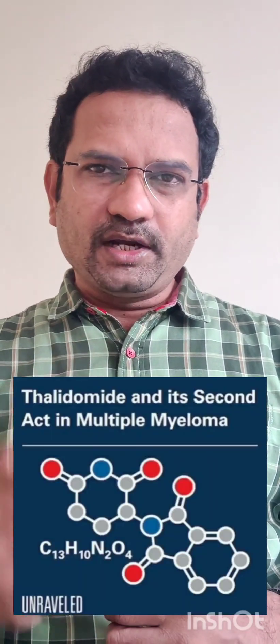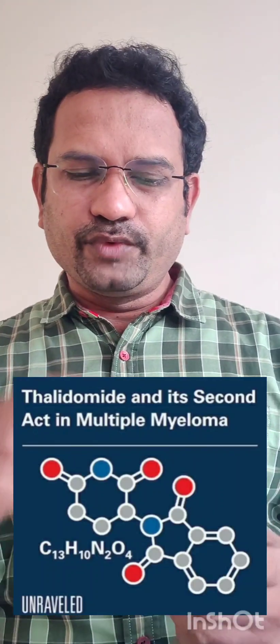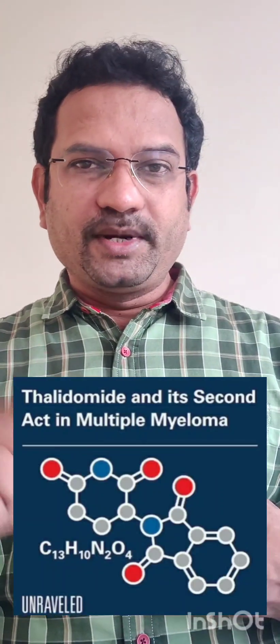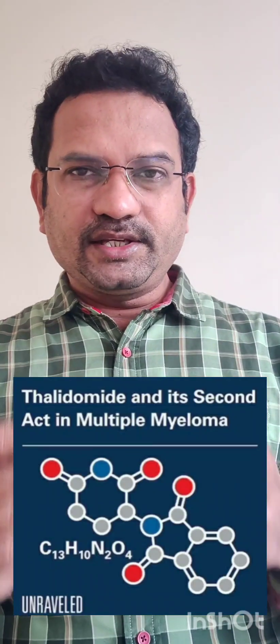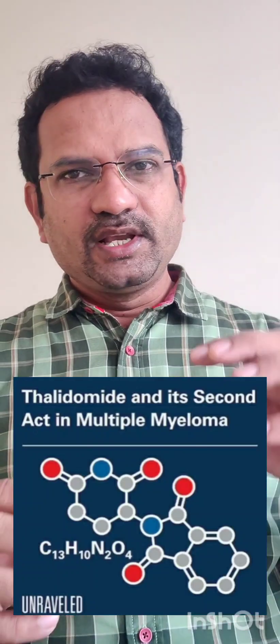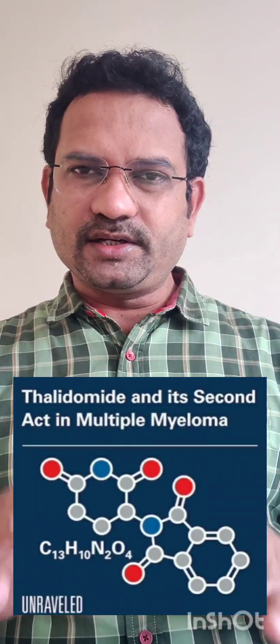Let us analyze each option. Option A: it is currently used to treat multiple myeloma. Multiple myeloma is a kind of blood cell cancer. In the bone marrow, red blood cells, platelets, and white blood cells are formed. One type of white blood cell is the plasma cell, from which antibodies are generated. Cancer of the plasma cell is called multiple myeloma, causing decreased red blood cells and platelets, bone damage, liver damage, and kidney damage. Thalidomide was approved by the FDA in 2006 to treat multiple myeloma — it inhibits that multiplication. So option A is correct.